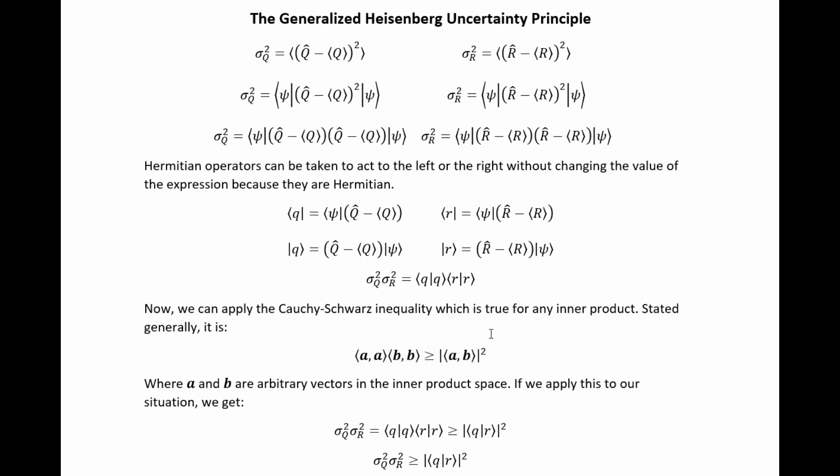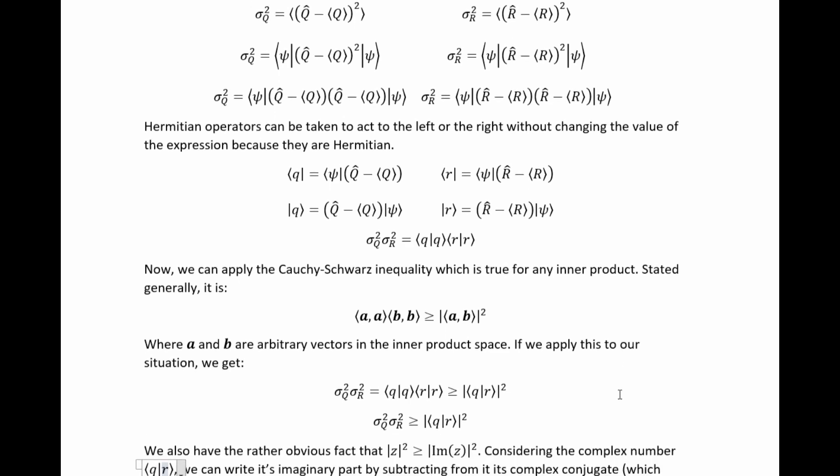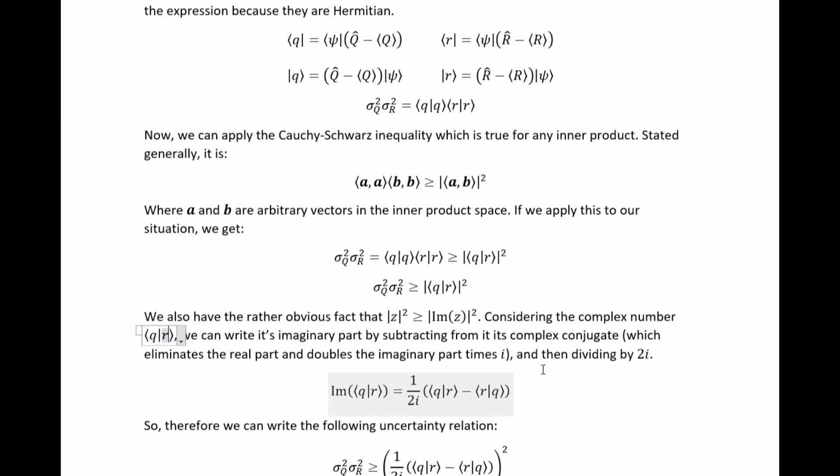The first of these inequalities that we're going to use to rewrite this side usefully is called the Cauchy-Schwarz inequality, which is true for any inner product. Stated generally, it looks like this, where A and B are arbitrary vectors in the inner product space. If we apply this to our situation, this situation up here, we get this result. And we finally have an inequality instead of an exact equality.